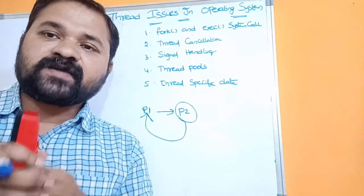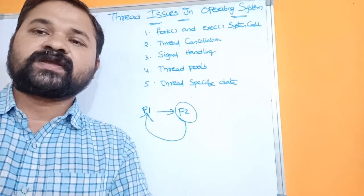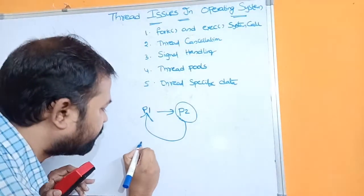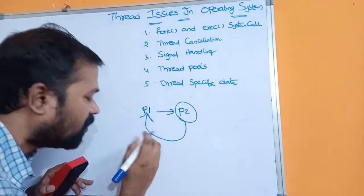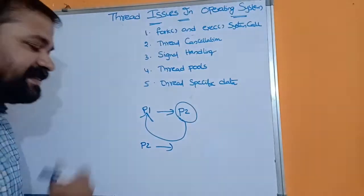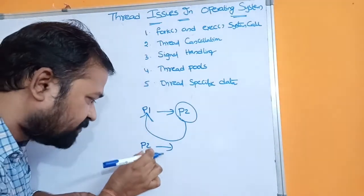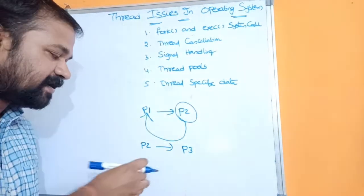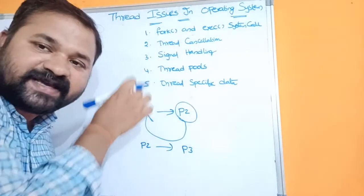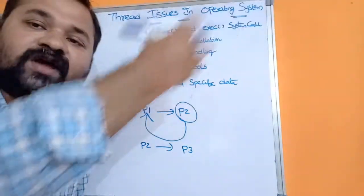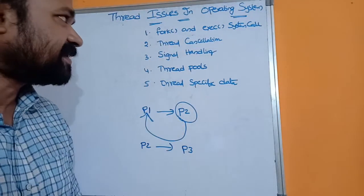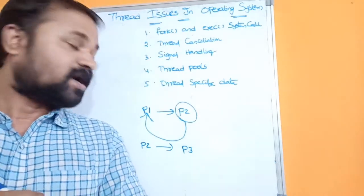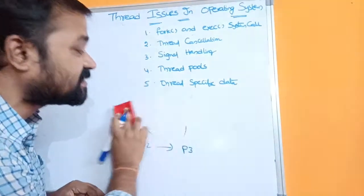The exec system call is mainly useful in order to replace a process with a new process. So if exec system call is called on process P2, then in place of process P2 a new process code will be replaced. That is the advantage of fork and exec system calls in processes.